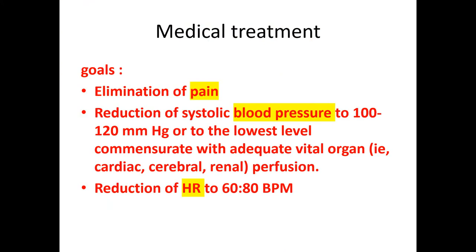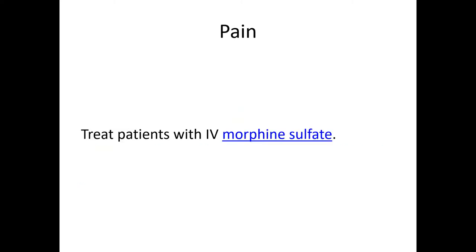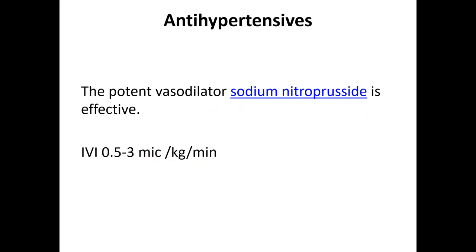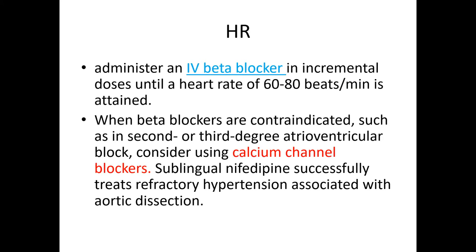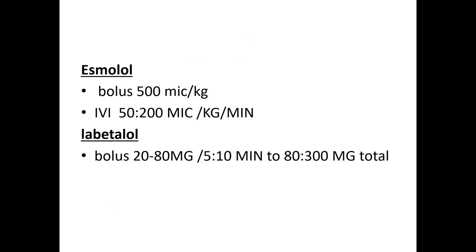Medical treatment aims to eliminate pain, control blood pressure to 100–120 mmHg, and control heart rate to 60–80 bpm. For pain, give IV morphine sulfate. For hypertension, give sodium nitroprusside by IV infusion at 0.5 to 3 mcg/kg/minute. For heart rate, give IV beta-blocker; if contraindicated, use calcium channel blockers. Esmolol or labetalol can be used — labetalol is given as a bolus of 20 to 80 mg every 5 to 10 minutes up to a total dose of 300 mg.